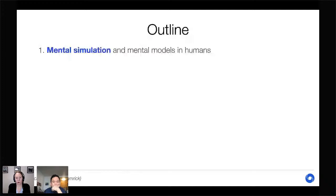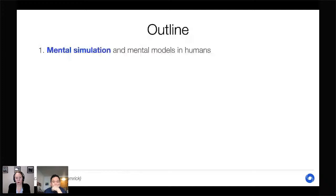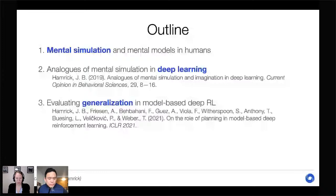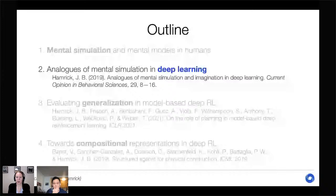That's a brief overview of what mental simulation looks like in humans. For the rest of the talk I want to discuss how we can develop algorithms that effectively make use of this type of mental simulation. First I'll discuss analogs of mental simulation in current deep learning approaches, then discuss some limitations — with particular emphasis on generalization — and finally talk about a project that offers a way to address some of these limitations.